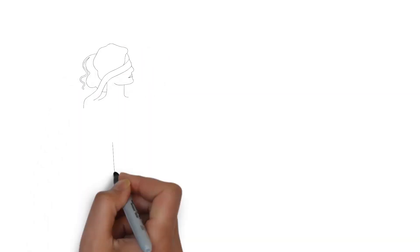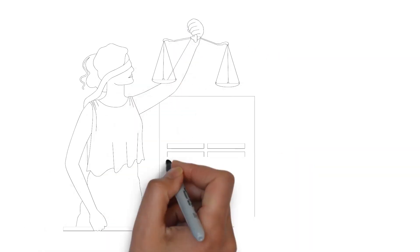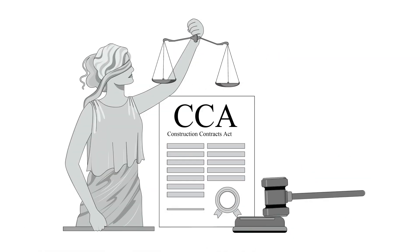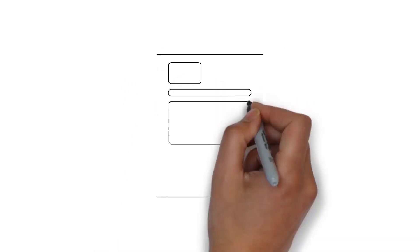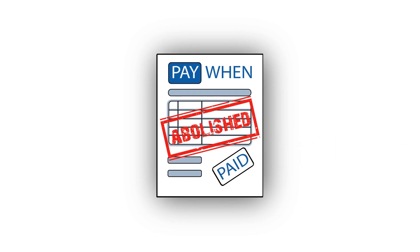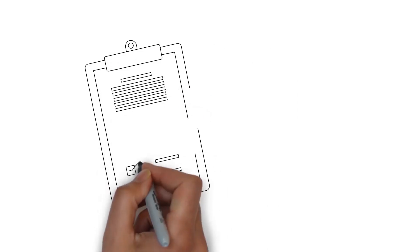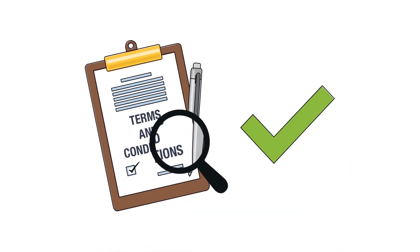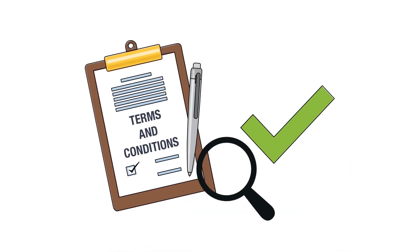Did you know that the Construction Contracts Act 2013 was introduced in 2016 to ensure prompt payment? The CCA meant the abolishment of pay-when-paid clauses in construction contracts. Now contractors and subcontractors must, at a minimum, comply with this Act regarding payment terms and conditions.